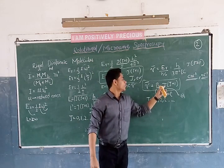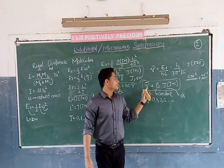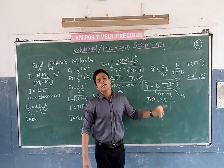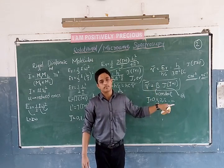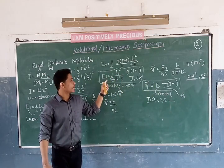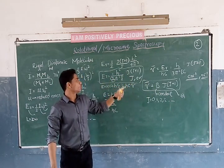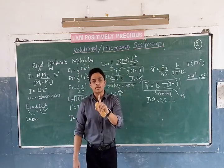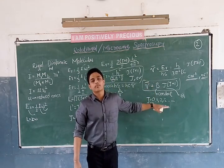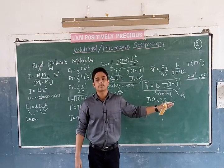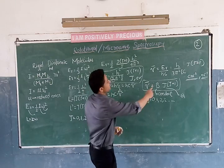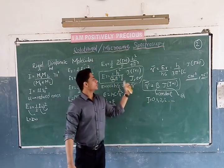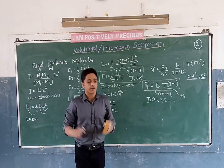If J equals 0, nu bar equals 0. If J equals 1, nu bar equals 2B. If J equals 2, nu bar equals 6B. If J equals 3, nu bar equals 12B. I can draw a graph for this. The unit will be in terms of wave number per centimeter. In these two equations, if we write only one graph it's enough for us. The graph will be drawn in our next classes.